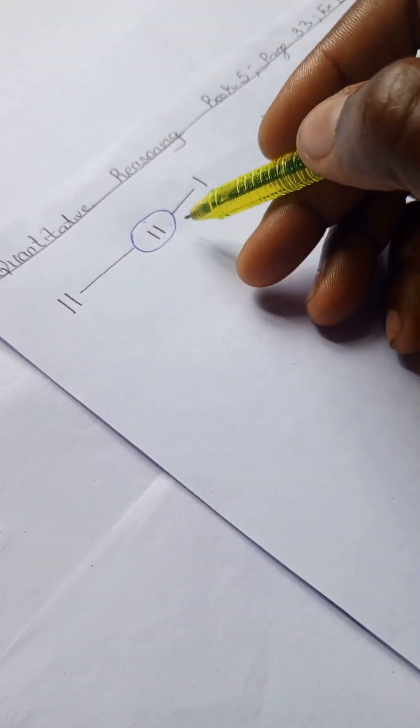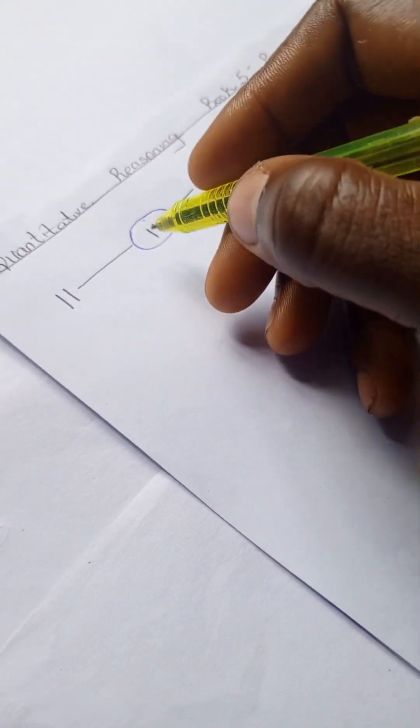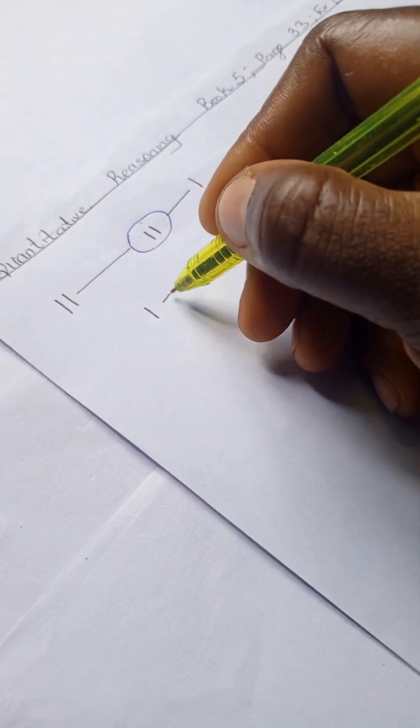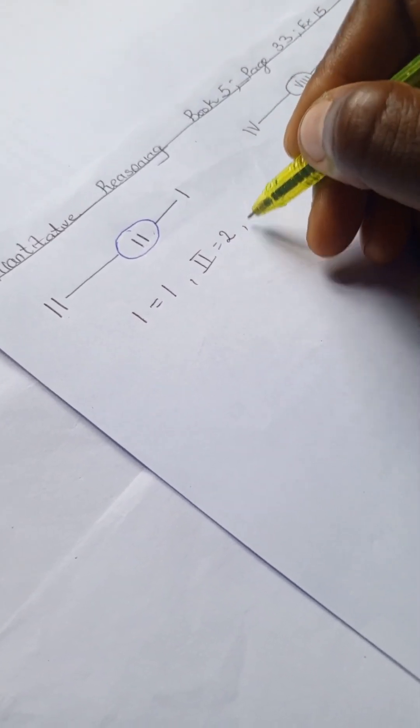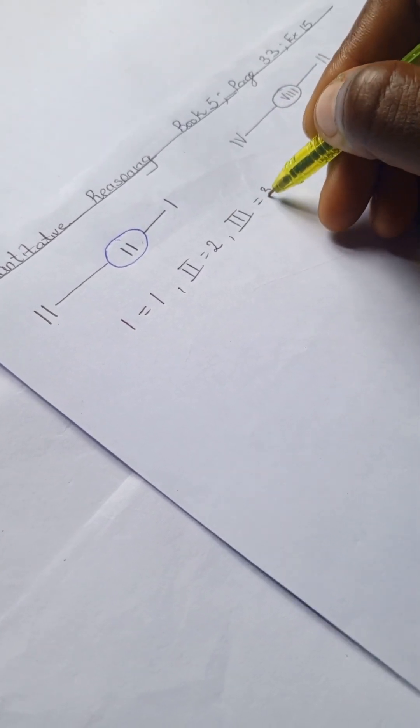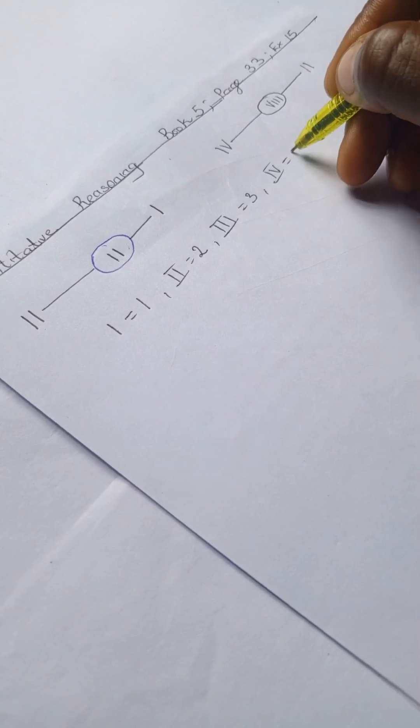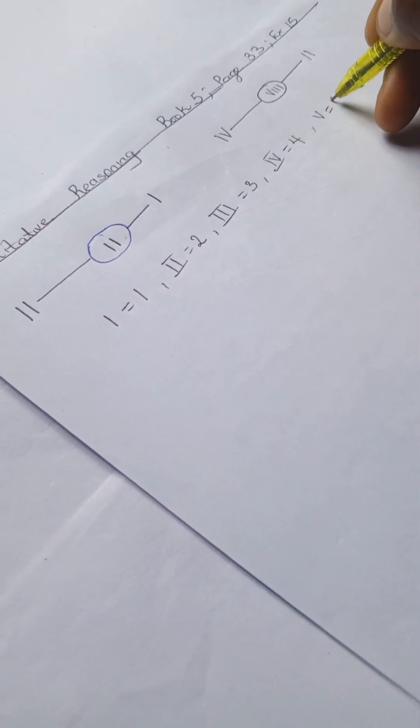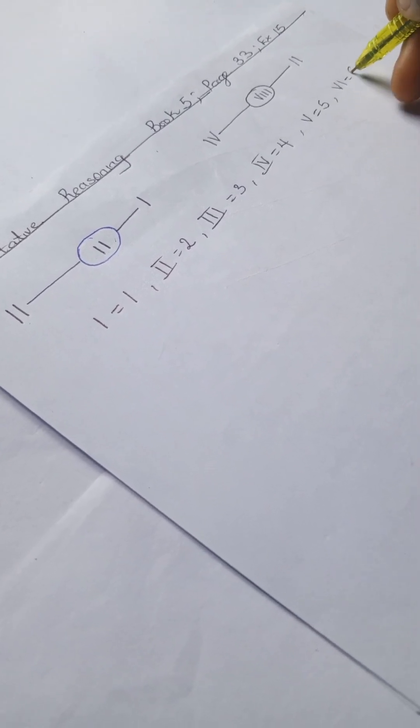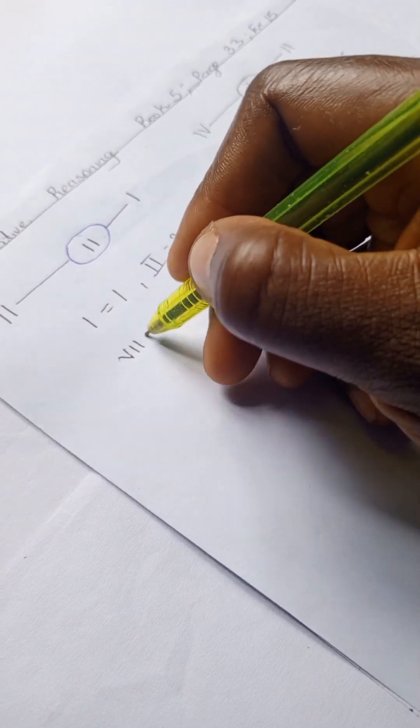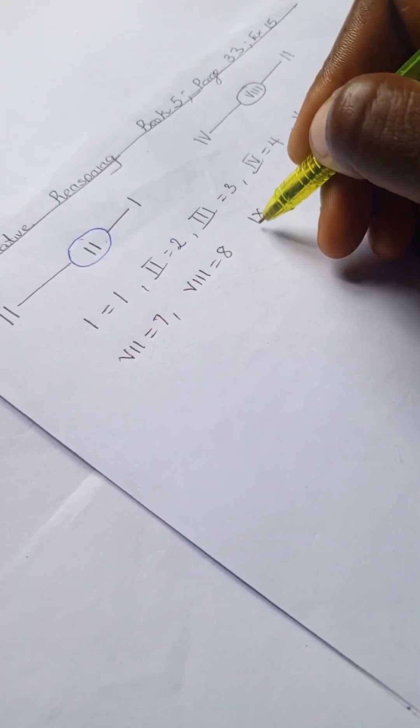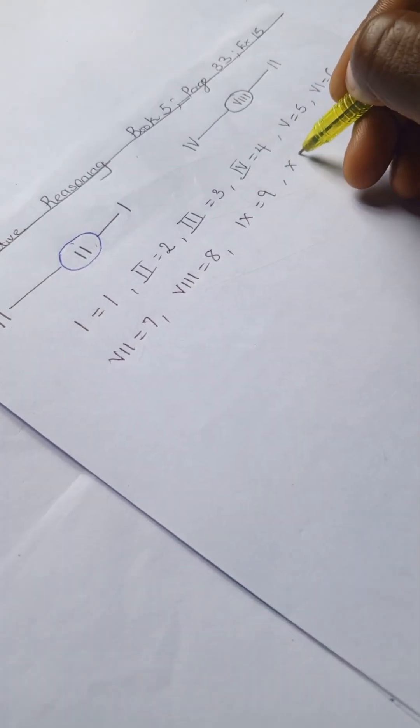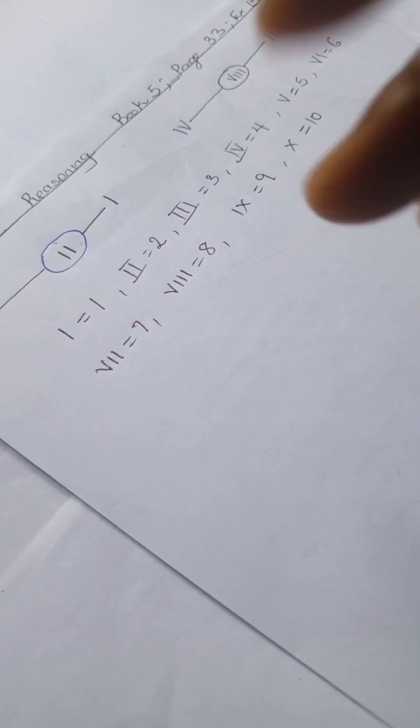So we're going to work on this. This is II, that's two. Our Roman numerals: I is one, II is two, III is three, IV is four, V is five, VI is six, VII is seven, VIII is eight, IX is nine, and X is ten, and so on.